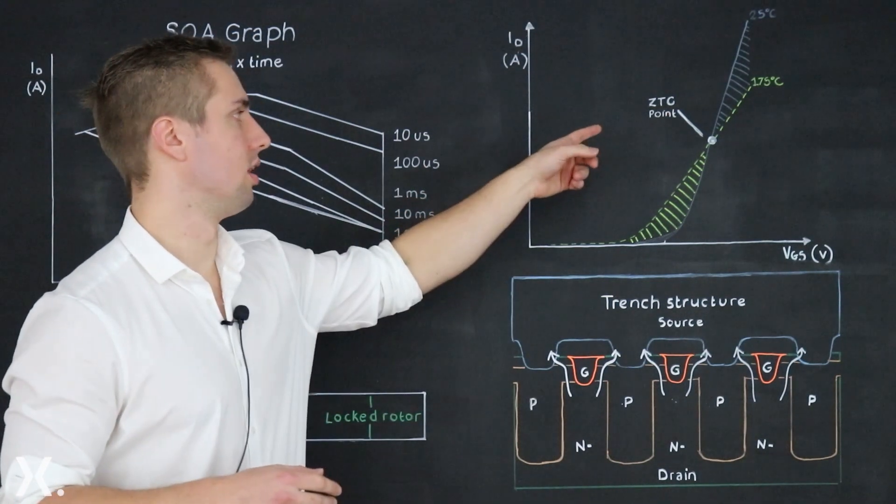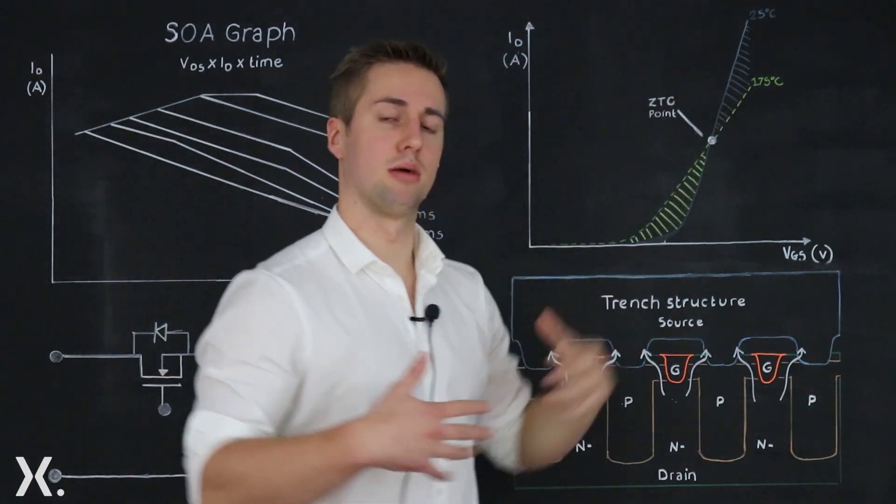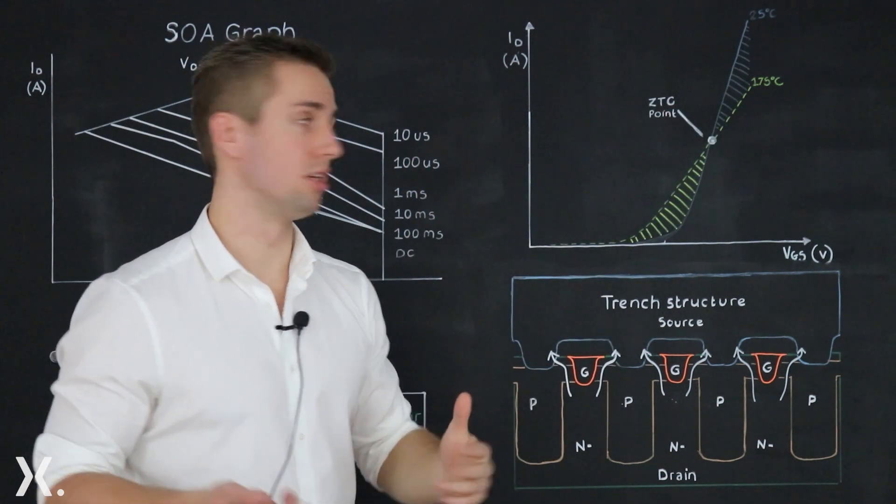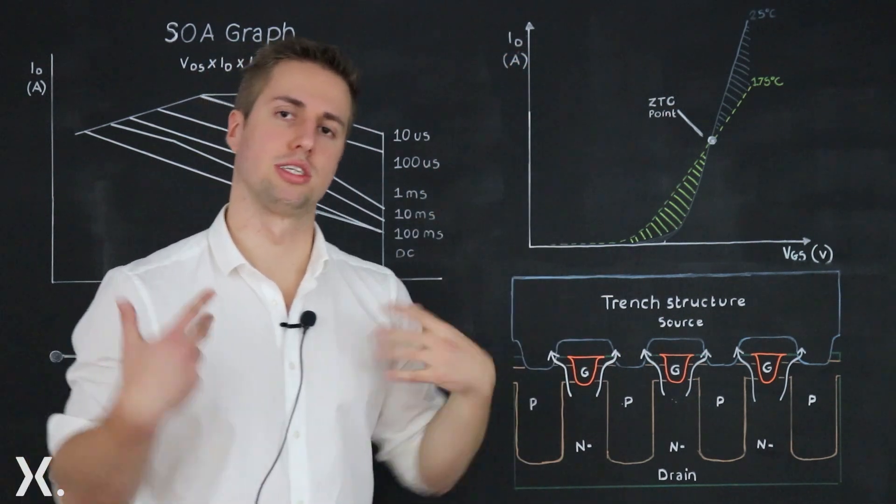If we cross the zero temperature coefficient point then as the temperature increases RDS on increases so drain current reduces. This puts the MOSFET into a more stable area.